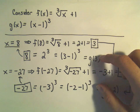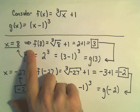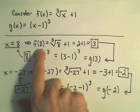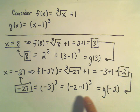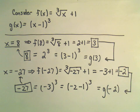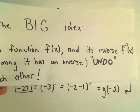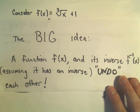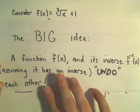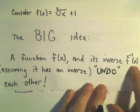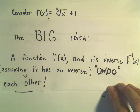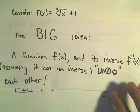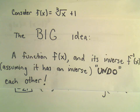This is the big idea of an inverse function. The idea of an inverse function is that somehow they undo each other. You start with something, f changes it, g changes it back. That's the big idea — a function f of x and its inverse, which we write as f to the negative one of x. Assuming it has an inverse — not all functions have inverses — the idea is that somehow they undo each other, they cancel each other out.